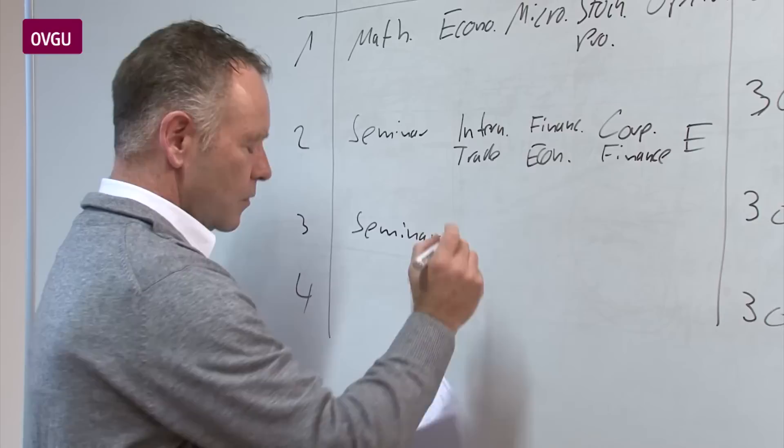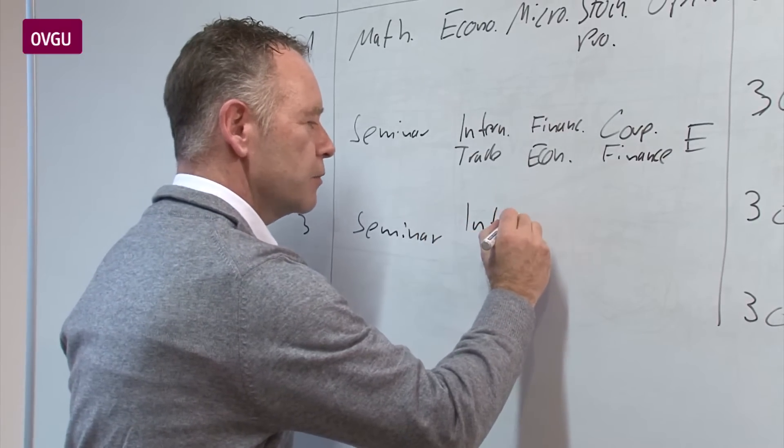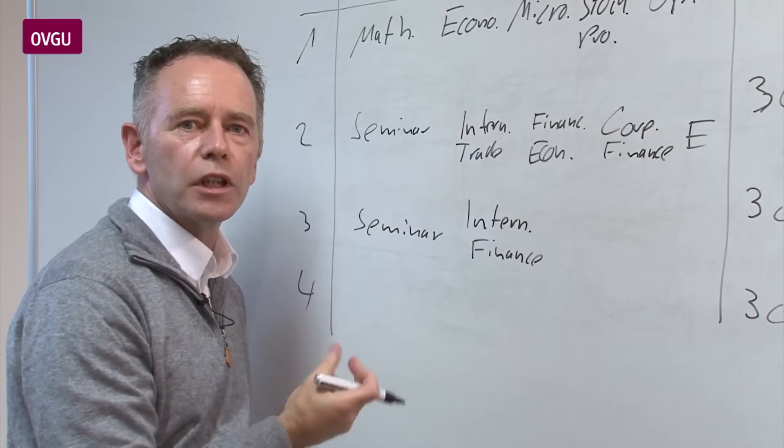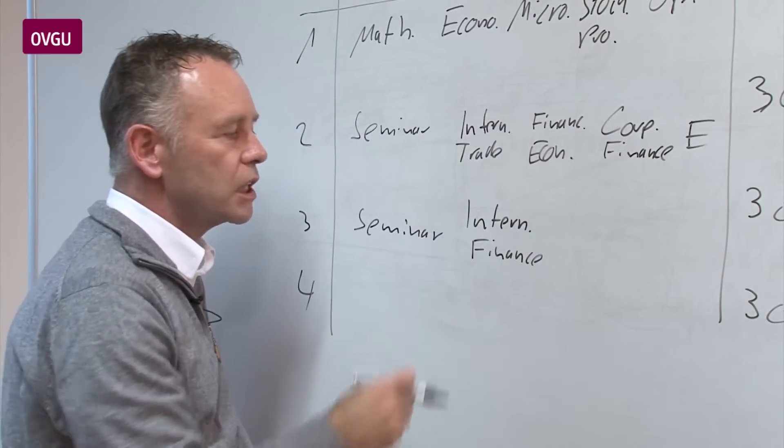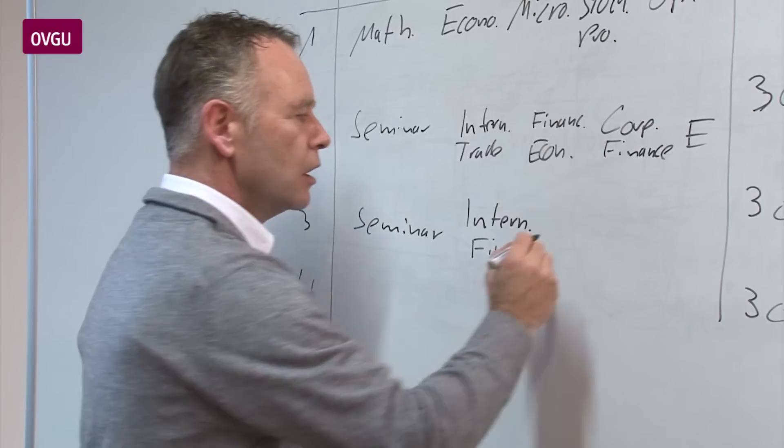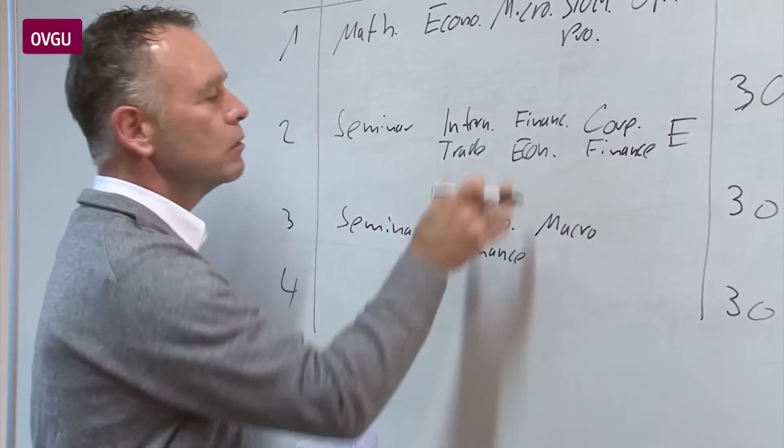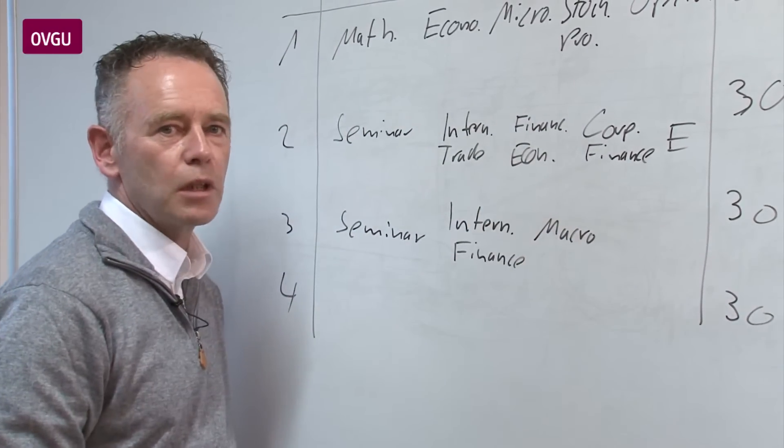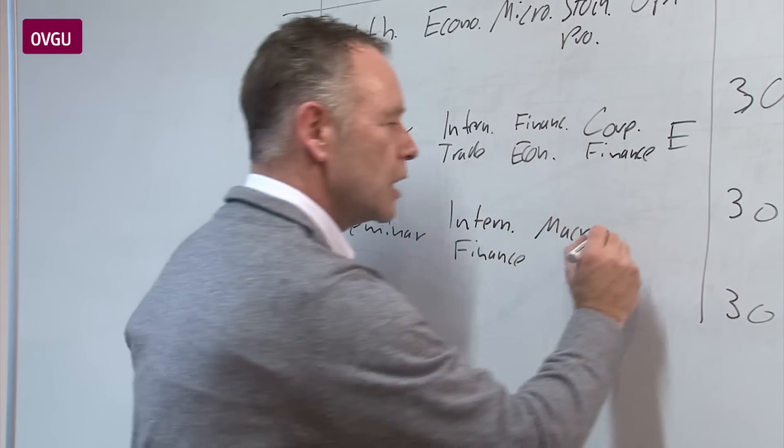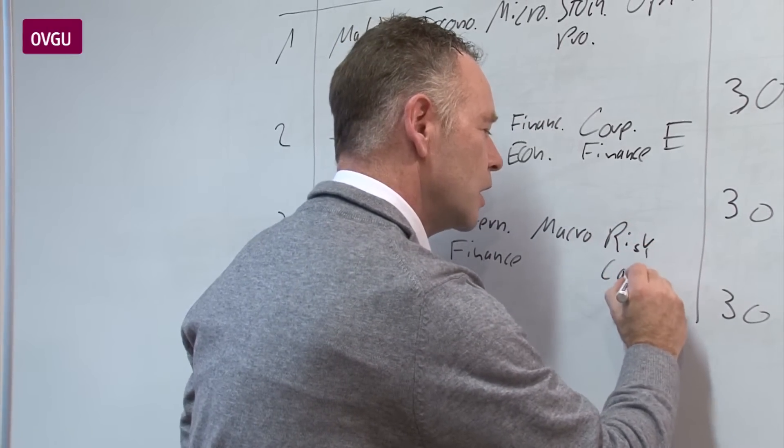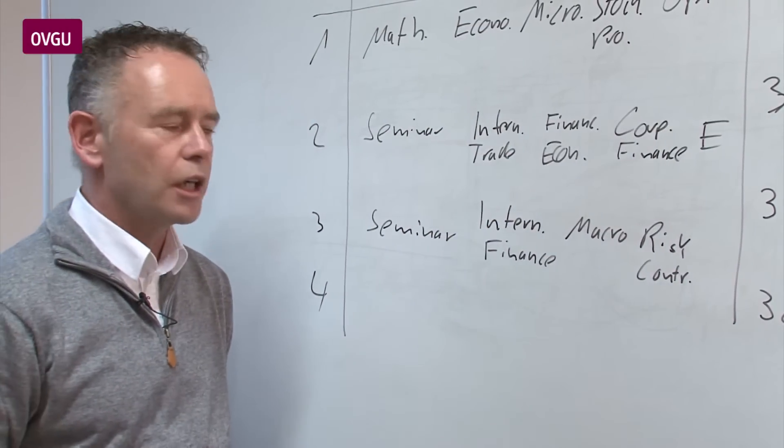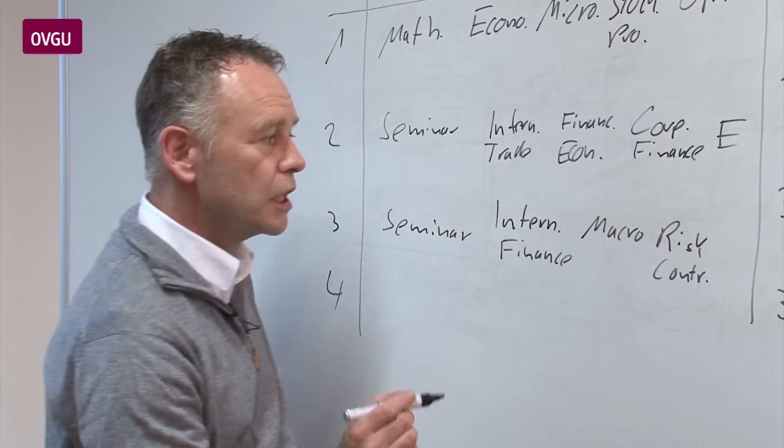In the third semester we have international finance. So in international finance we talk for example about cross currency rates and what does it mean for the companies. I would suggest that you also have macroeconomics as well, as important as microeconomics you all know. And we have risk controlling in the third semester as the finance lecture.